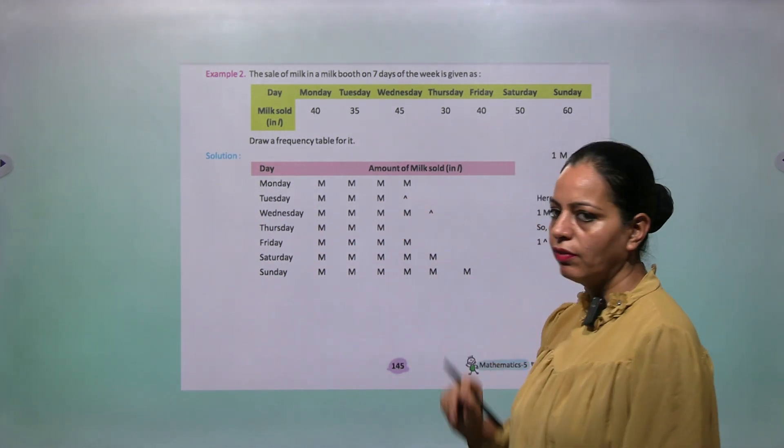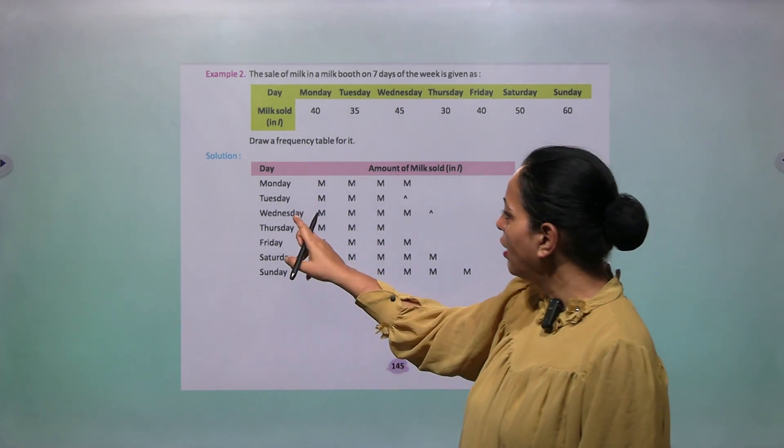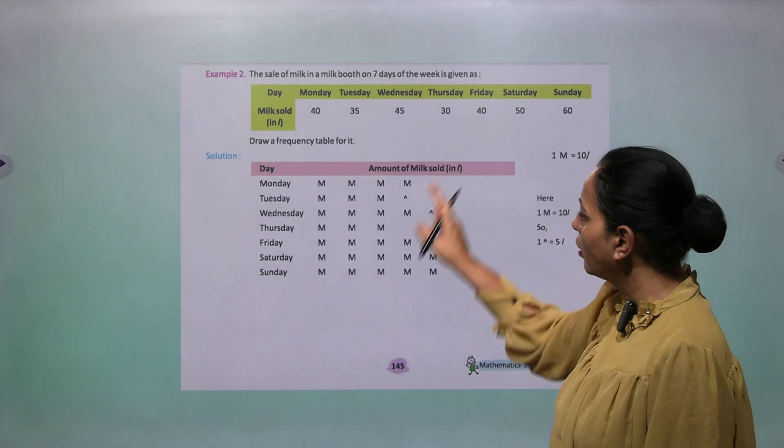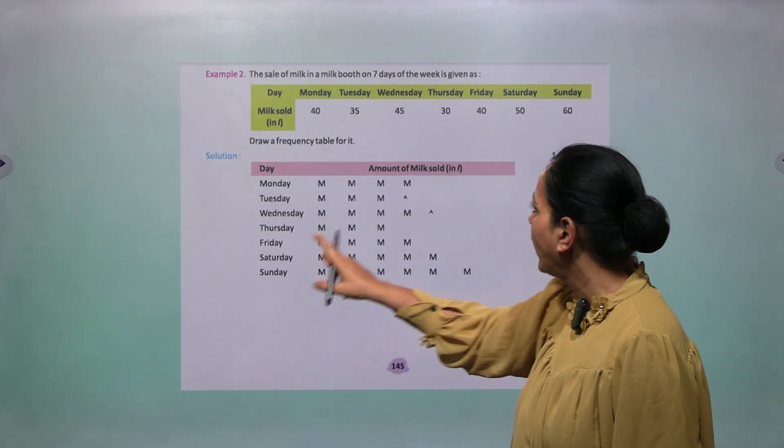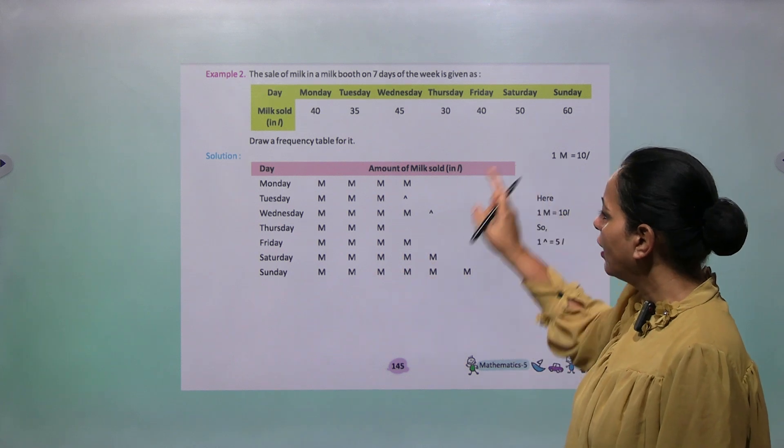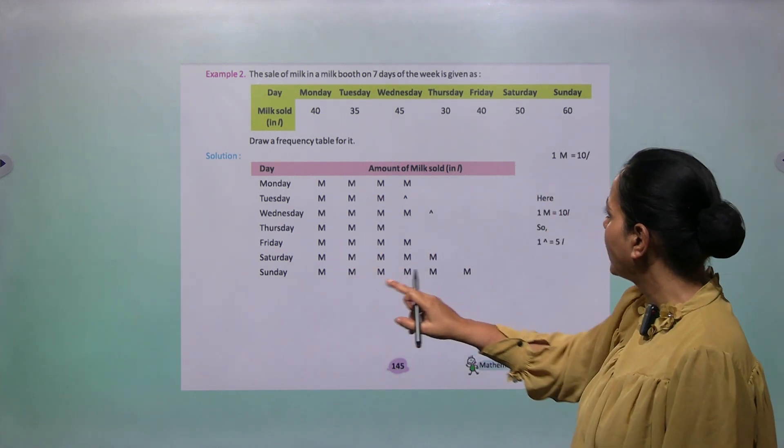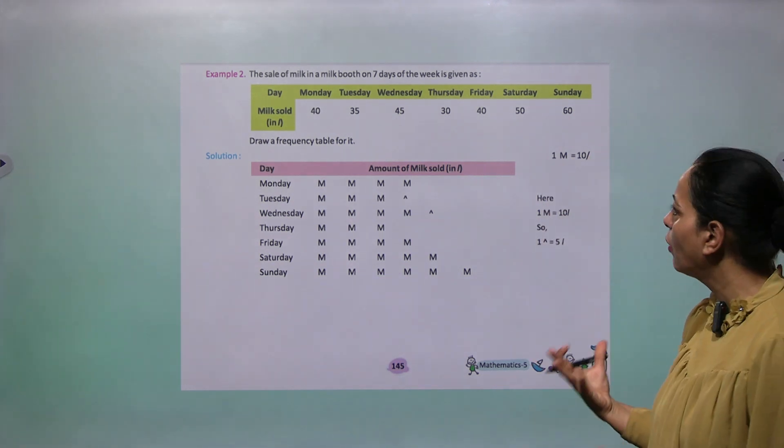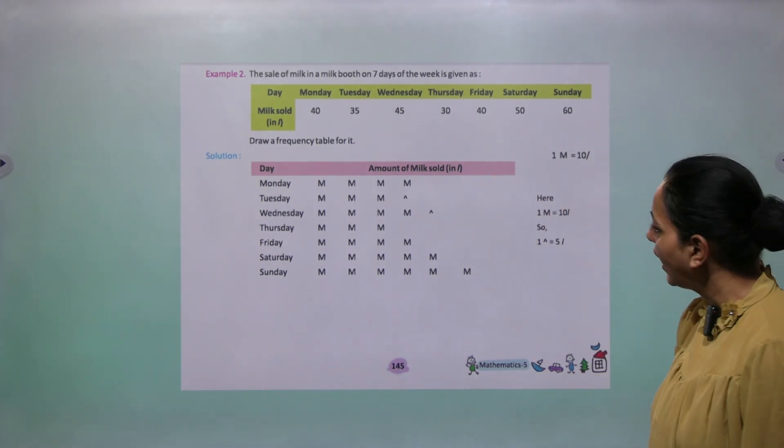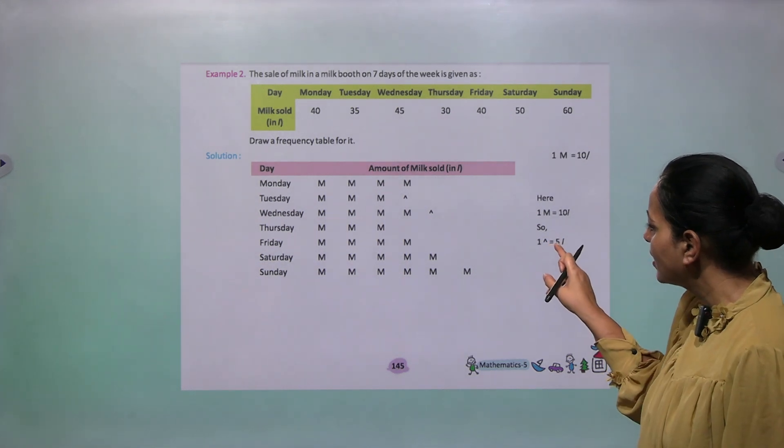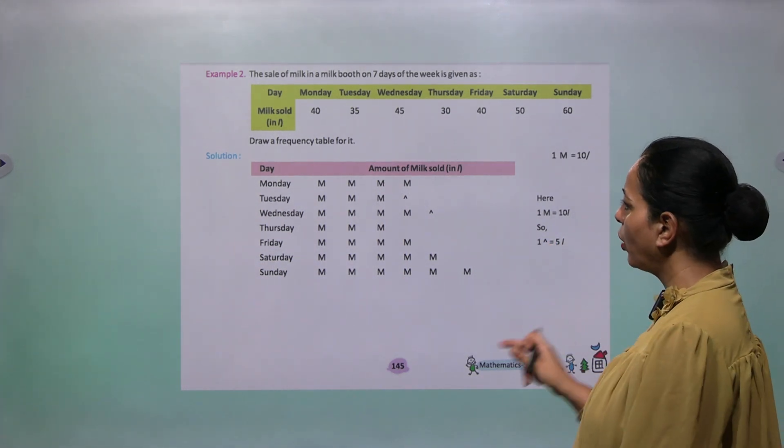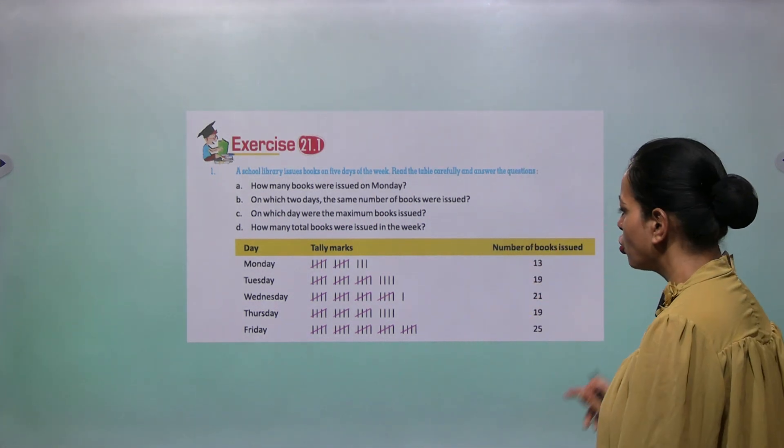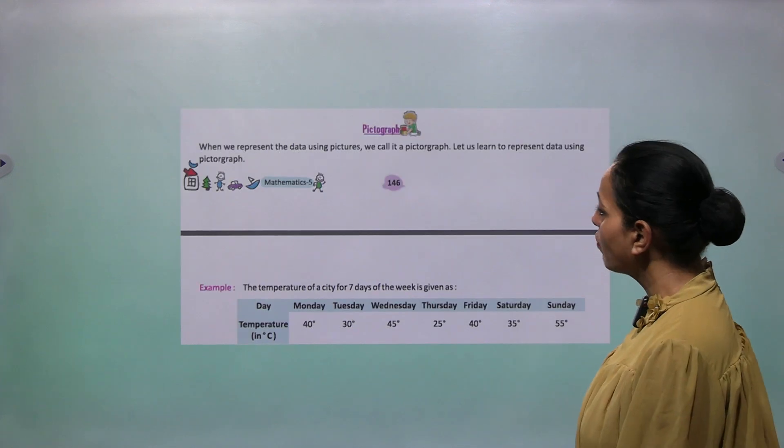Similarly, Wednesday we have 45, so 4M and one 5. Thursday we have 30, so 3M. Friday we have 40, so 4M. And Saturday 50, so 5M. And Sunday 60, so 6M. We are writing here M is representing 10 liters and this is representing 5 liters. So 21.1 is based on such type of questions, you can enjoy it.